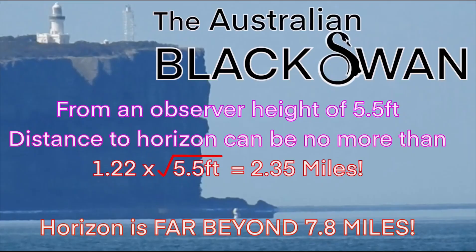Enter the Australian Black Swan. From an observer height of 5.5 feet, distance to the horizon can be no more than 1.22 times the square root of 5.5 feet, which equals 2.35 miles. That is where the horizon — the physical earth curvature — must be on a sphere of radius 39.59 miles from a 5.5-foot observer height. And we can clearly see the horizon is far beyond 7.8 miles.